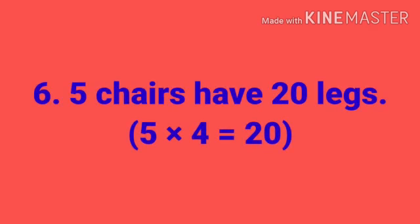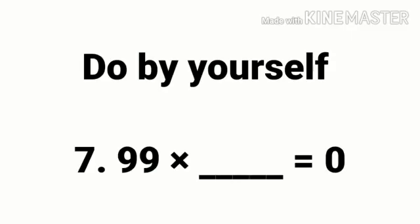So 5 chairs have 20 legs. From question number 7 to 10, you have to do by yourself. Question number 7: 99 into dash equals to 0.